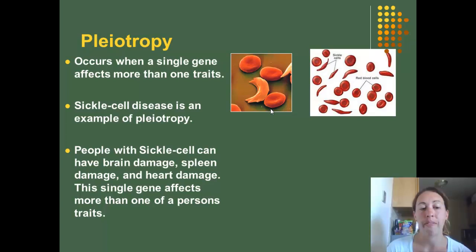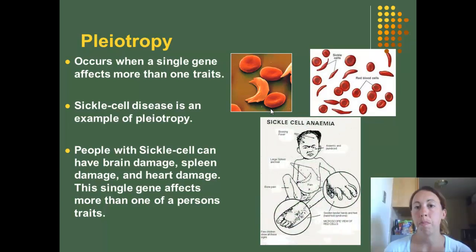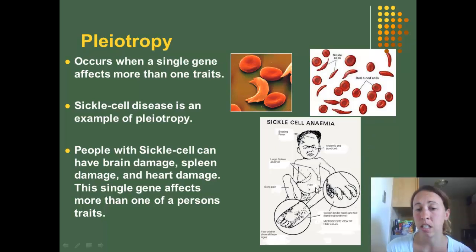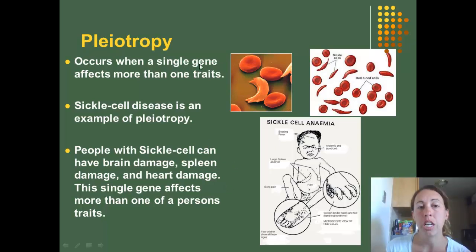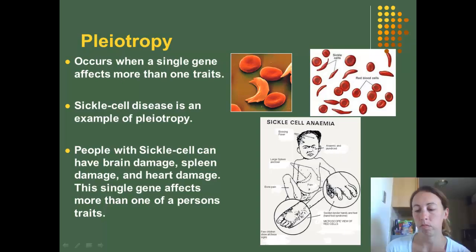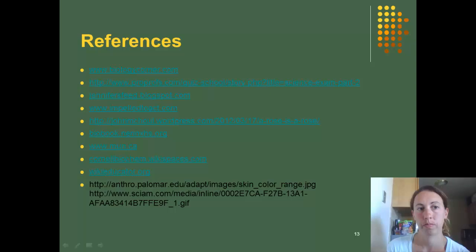It's a single gene that affects more than one of the person's traits. So if a person has sickle cell anemia, besides their cells being skinny and flat, they would also have swollen hands, a large spleen and liver, and bone pain. That one single gene causing the sickle cell is causing more damage than just having the abnormal cell shape — the sickle cell shape is causing these other issues. And those are the exceptions to Mendel's Laws.